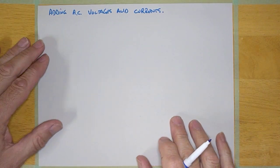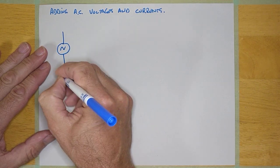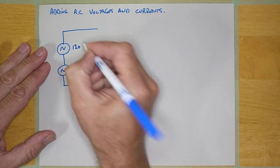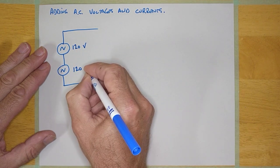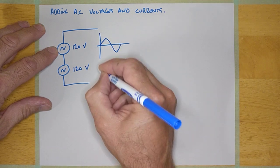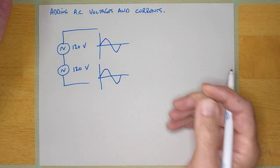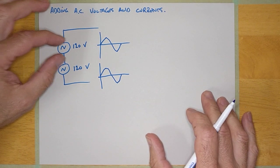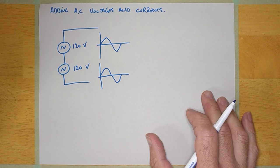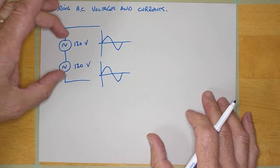The trickier thing is what happens if I try to add some AC voltages together like this. Let's say this is 120 volts and this is 120 volts. Take a look at this with a scope — I see this waveform. Take a look at this one with a scope — I see this waveform. Measure this with an AC meter, 120. Measure this with an AC meter, 120. What happens if I measure this with an AC meter? And what happens when I put a scope across this?